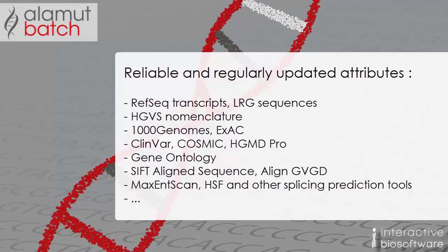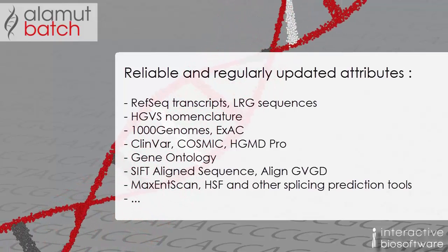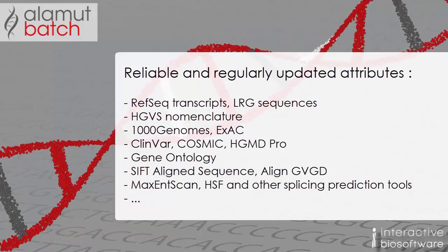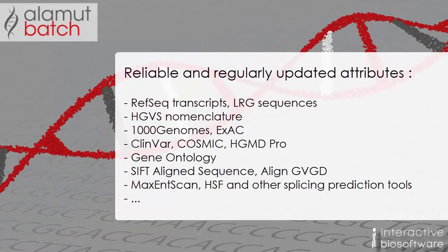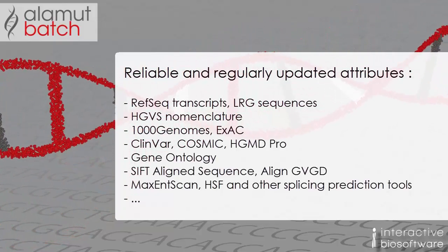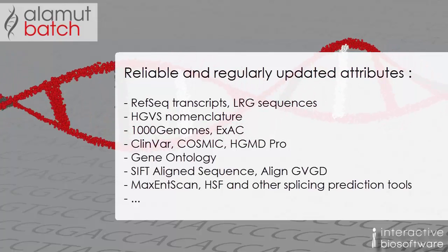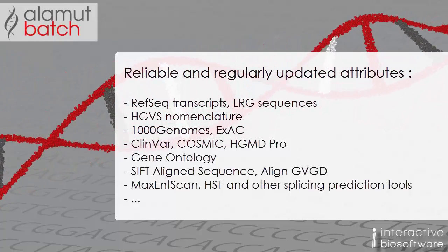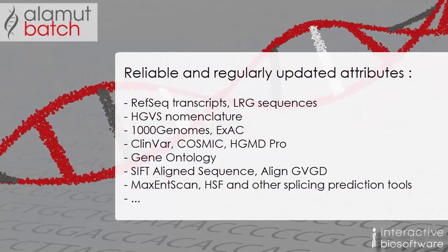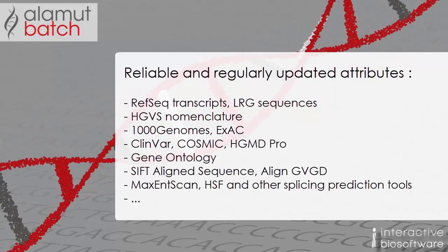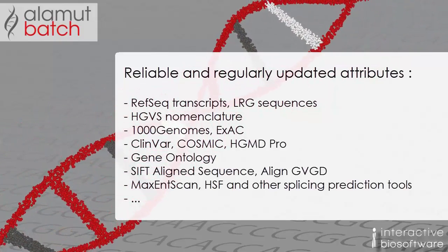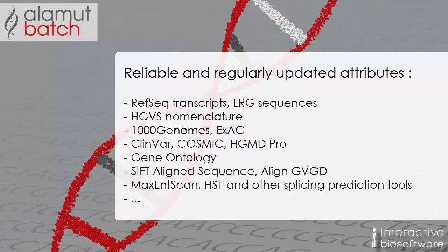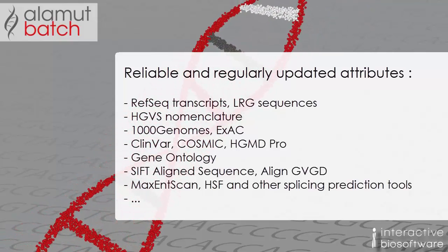These attributes include effects on human genes, RefSeq transcripts and LRG sequences, accurate HGVS nomenclature descriptions, allele frequencies from different public databases such as 1000 Genomes and ExAC, annotations on phenotypes from ClinVar, COSMIC and AGMD Pro, and on biological processes with gene ontology annotations.